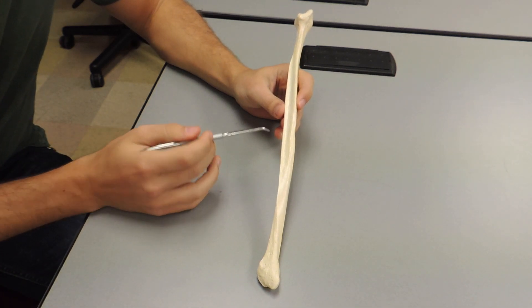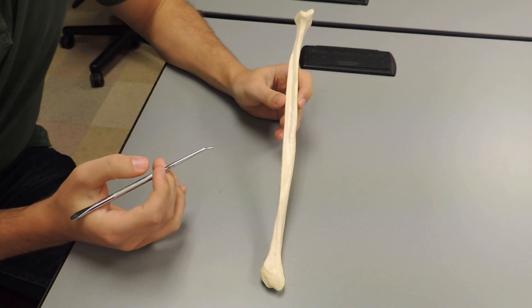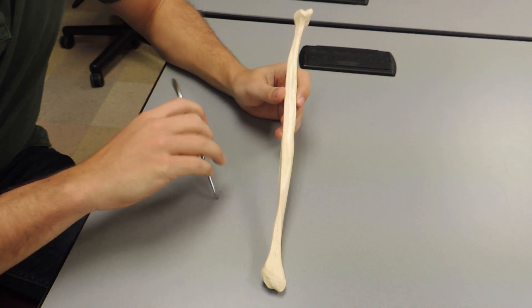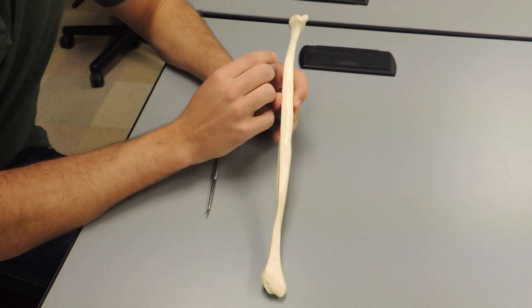So this is the other bone in the lower leg, this is the fibula. The first thing to do with the fibula, you want to orient yourself to what is the head and what is the malleolus.